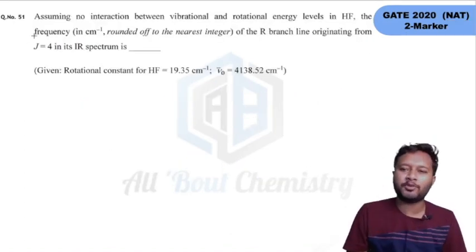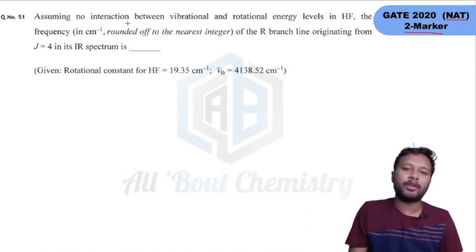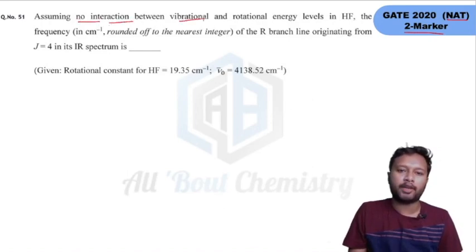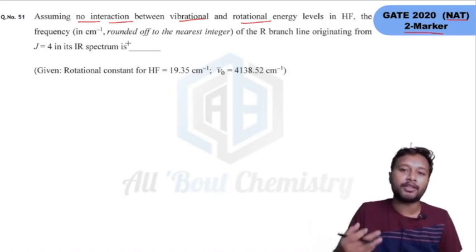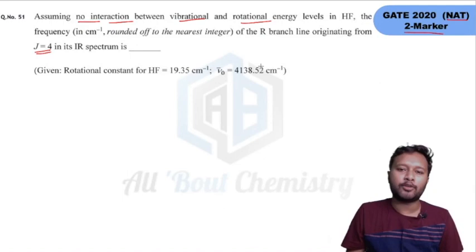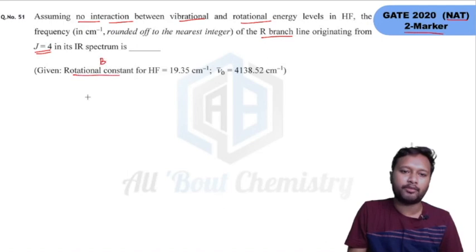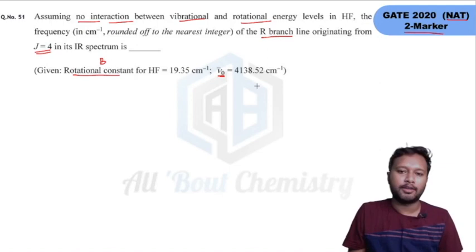The next question is also a two-marker numerical answer type question. It states: assuming no interaction between vibrational and rotational energy, in hydrogen fluoride (HF), find the frequency in centimeter inverse (rounded to the nearest integer) of the R-branch line originating from J=4 in its IR spectrum. The given values include the rotational constant B and the fundamental frequency.